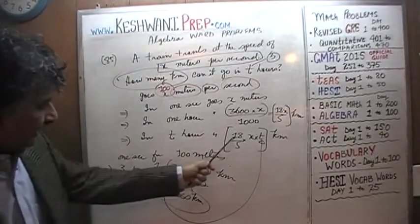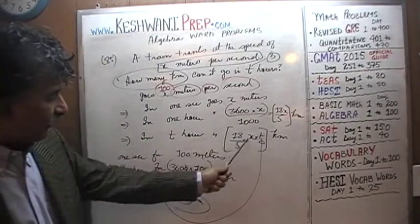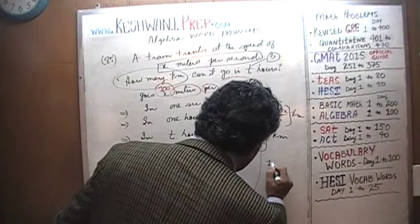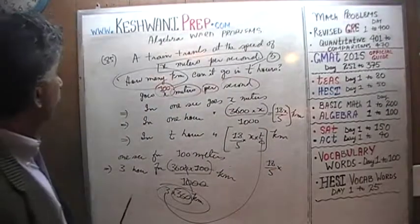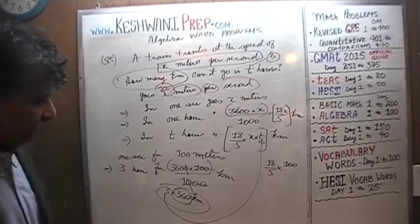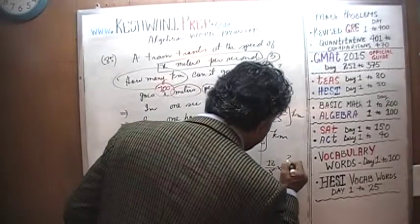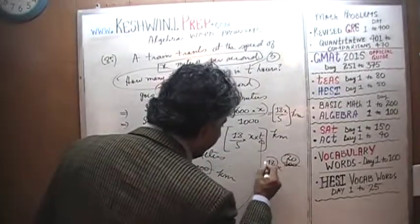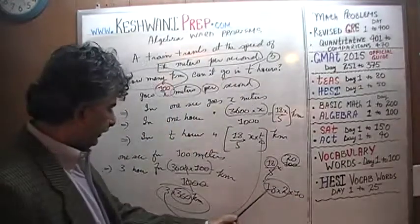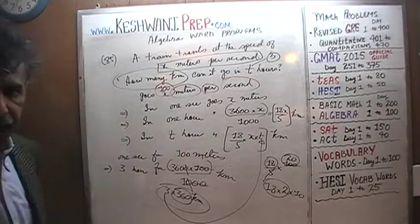We need to establish that 18 over 5 times x equals 360 when x = 100. So: 18 over 5 times 100. Dividing top and bottom by 5, 100 becomes 20. Then 18 times 20: that is 18 times 2 times 10, which is 36 times 10 equals 360. So that is the right answer.